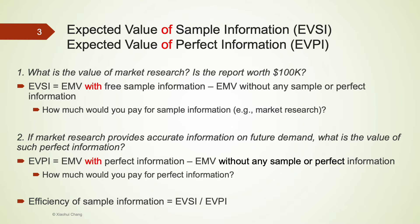EVSI is the difference between the expected monetary value (EMV) with free sample information and EMV without any additional sample or perfect information. EVPI is the difference between the EMV with perfect information and the EMV without any information. Once we have EVSI and EVPI, we can also calculate efficiency as their ratio. If the report produced from market research on future demand is close to perfect, then the efficiency is close to 1.